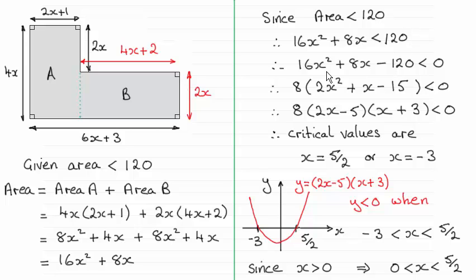Subtract 120 from both sides and pull out 8 as a common factor - or you could divide through by 8, it doesn't matter. The point is that this quadratic factor needs to be factorized, and then you've got to find the critical values. That's where 2x - 5 equals zero or x + 3 equals zero, which gives x = 5/2 or x = -3.